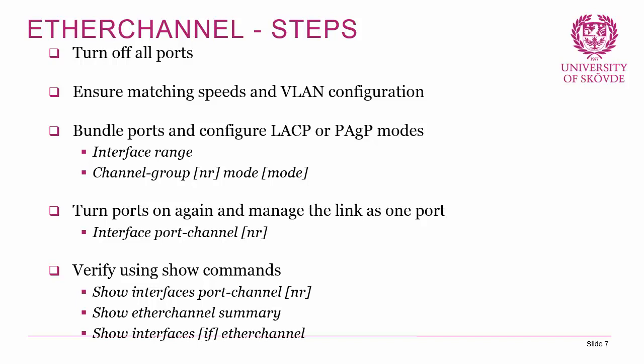To configure the bundle, use 'interface range' for the desired ports, then the interface configuration command 'channel-group [number] mode [active|passive|desirable|auto]'. Once done, turn the ports on again and manage the link as one using 'interface port-channel [number]', where you can configure it as a trunk. Verify using 'show interface port-channel', 'show etherchannel summary', and 'show interfaces etherchannel'.